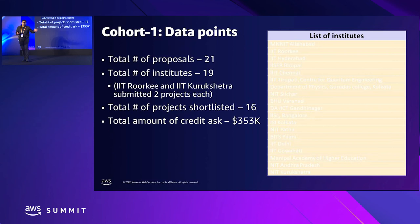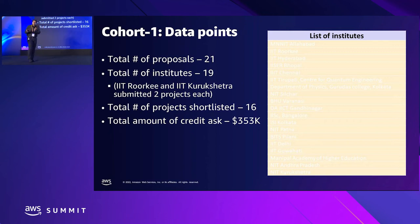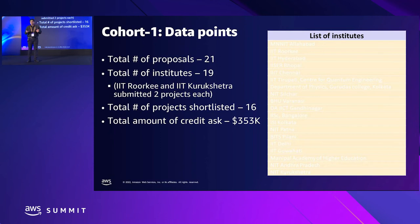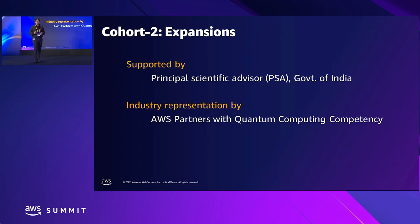We launched MeitY Q-CAL last year. Applications for Cohort 1 were open from September to October last year, and projects were onboarded this April-May. Here are some data points: 19 institutes submitted 21 proposals; 16 projects were shortlisted after a rigorous evaluation process. And this morning in the keynote, Cohort 2 was announced.